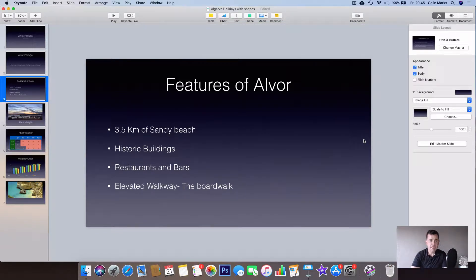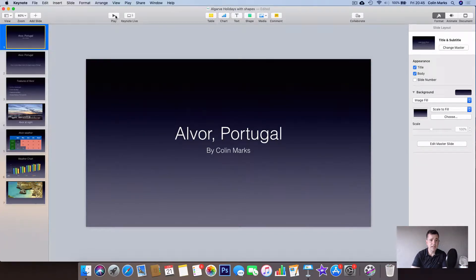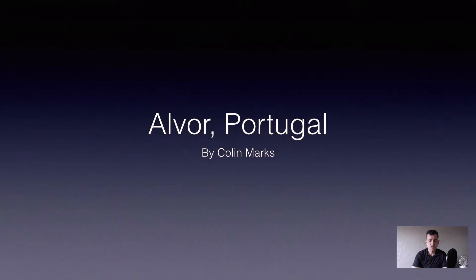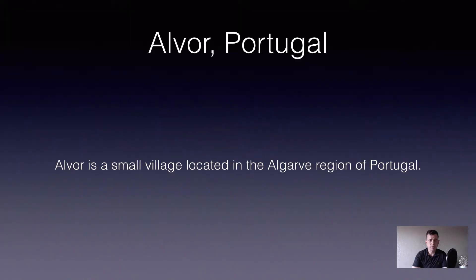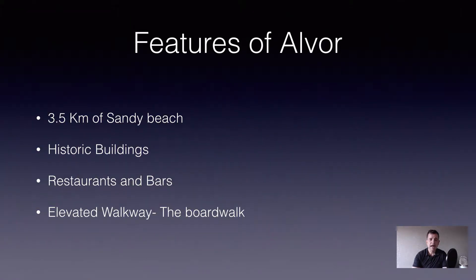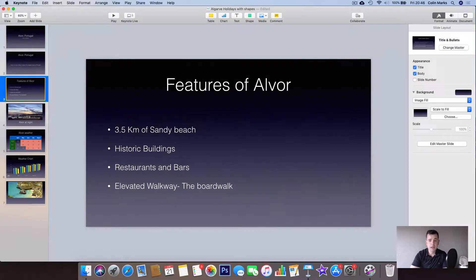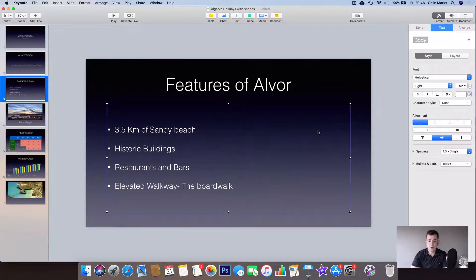The next thing we want to look at is animation — this is when we want to bring a bit of life to our presentation. At the minute when we run the slideshow or keynote, we press the enter button and everything appears on the screen at once. What we want to do is start bringing the bullet points in one by one, and we're going to do that now.